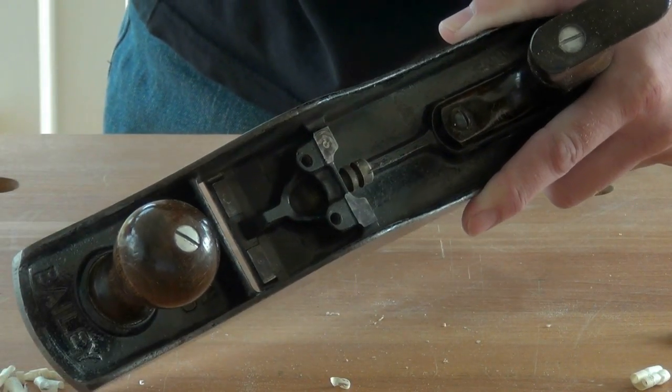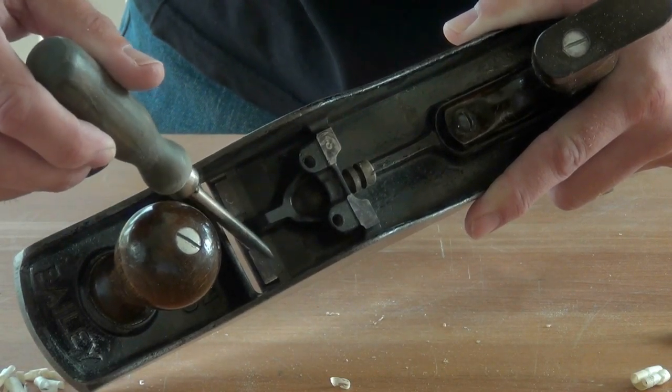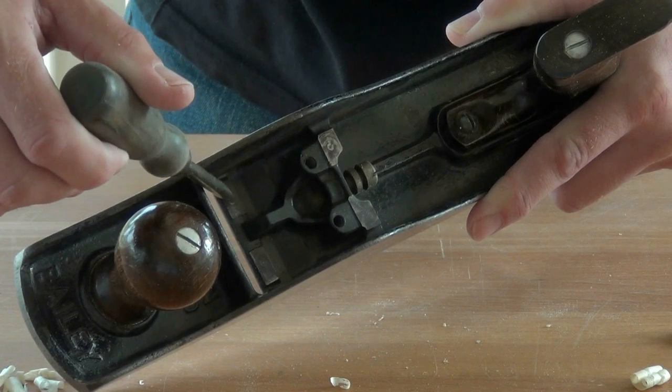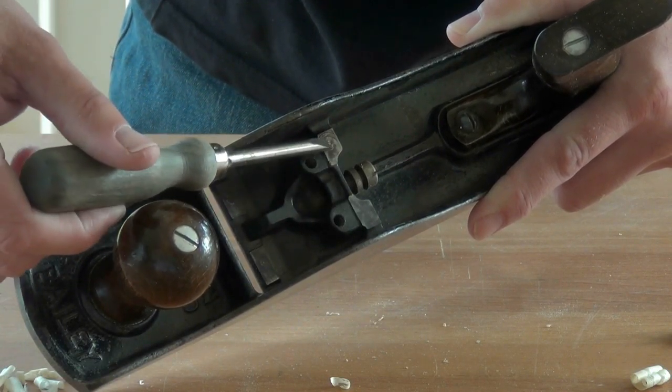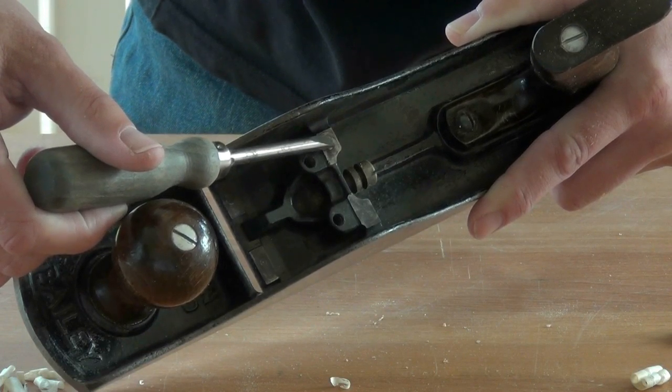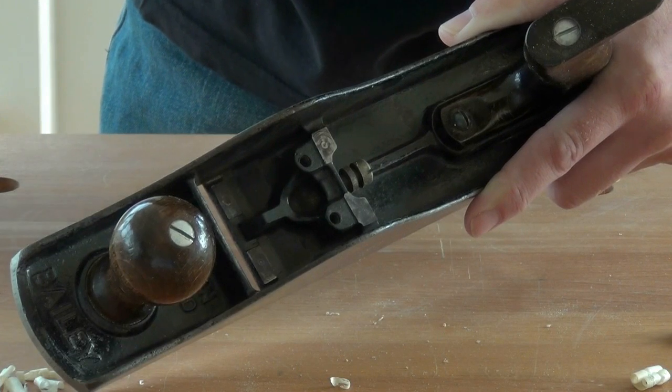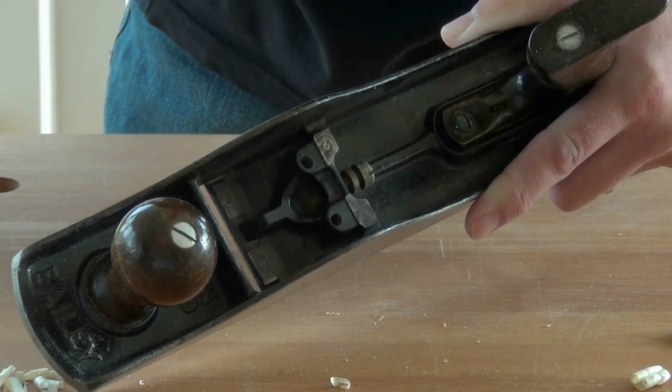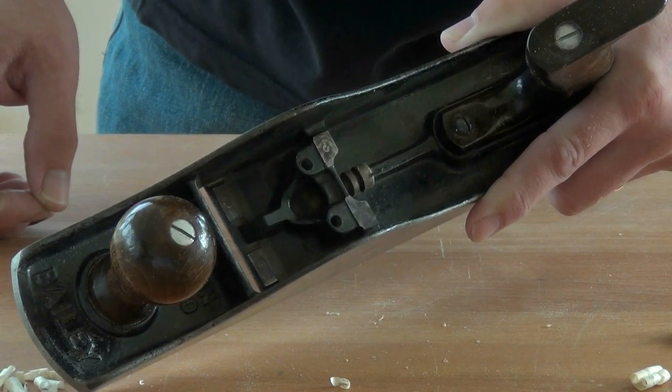The frog sits in the body of the front of the plane on two pads down by the mouth and two pads further back. Again, they're machined in the factory, and once again the mating of those to the frog can almost certainly be improved by the user.